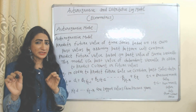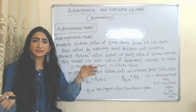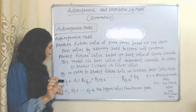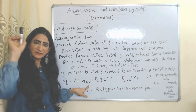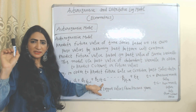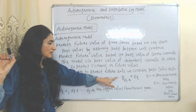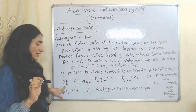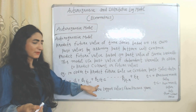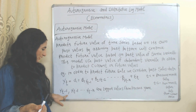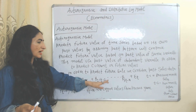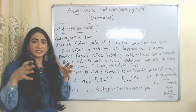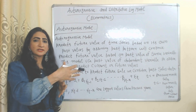For example, the autoregressive model tries to predict current sales based on past sales data. Here, yt is current sales, yt minus one is previous month sales, yt minus two is sales of the previous two months, and so on till yt minus n. So yt minus one and yt minus two are lagged values from previous periods.